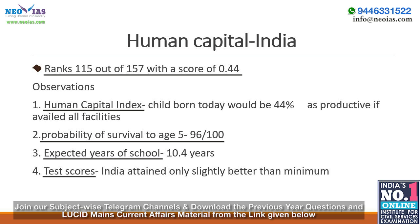Regarding learning-adjusted years of school: when accounting for what children actually learn, expected years of school is only 5.8 years, compared to 10.2 years enrolled — showing a lack of quality. Regarding adult survival rate: 83% of 15-year-olds in India will survive until age 60 under current conditions. Regarding healthy growth — which refers to non-stunted children — 62 out of 100 children are not stunted, meaning 38 children are stunted and at risk of cognitive and physical limitations that can last a lifetime.